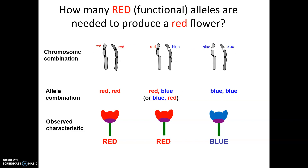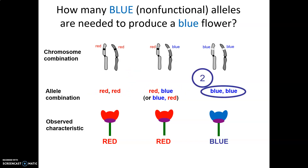Since the functional allele coded for a red flower, we can call that allele the red version of the gene. How many red alleles are needed to produce a red flower? It works when there are two red alleles, and it also works when there is just one red allele — so only one red allele is needed. How many blue alleles are needed to produce a blue flower? The blue allele codes for a non-functional enzyme, and all the enzyme needs to be non-functional. If there's even just one copy of a functional enzyme, it'll turn the flower red — so you need two copies; both need to be the blue allele for that flower to be blue.